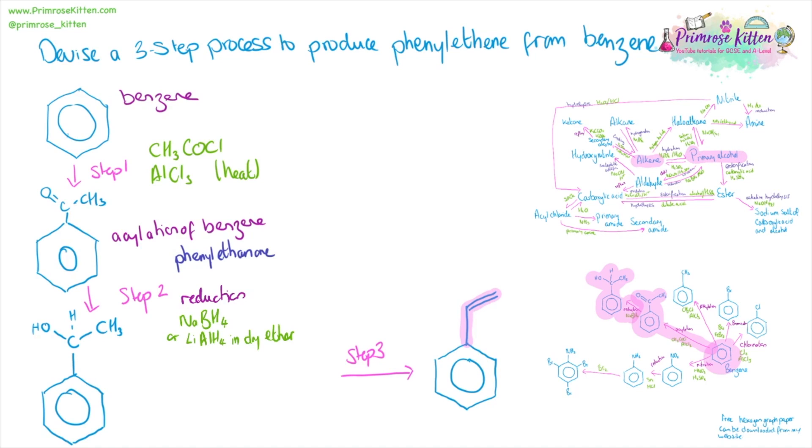What we've effectively made now is a primary alcohol. So we can now switch to our other map. And we want to go from a primary alcohol to an alkene. This is just a dehydration reaction. Probably one of the first reactions you looked at. But combining it with the benzene pathway makes this a much more complicated, a much trickier question to work out how to get from one place to another place.